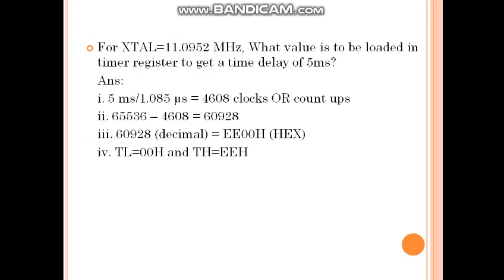For an initial crystal frequency of 11.0592 MHz, what value is to be loaded into the timer register to get a time delay of 5 ms? For that purpose: 5 ms divided by 1.085 microseconds equals 4608 clock counts. Then 65536 minus 4608 equals 60928, which in hex is equal to double-Y double-X hex. So TL equals 00H and TH equals the corresponding high byte.